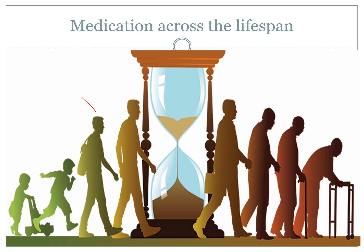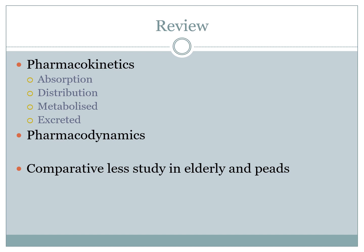The lesson will focus on the pediatric and geriatric side of the house. First, a little revision on what we covered in the first lesson on pharmacology fundamentals. Pharmacokinetics deals with what the body does to the drugs — the changes the body makes to allow absorption, distribution, metabolism, and excretion. Pharmacodynamics is all about what the drug does to the body: the physiological effects, the adverse effects, and the drug interactions.